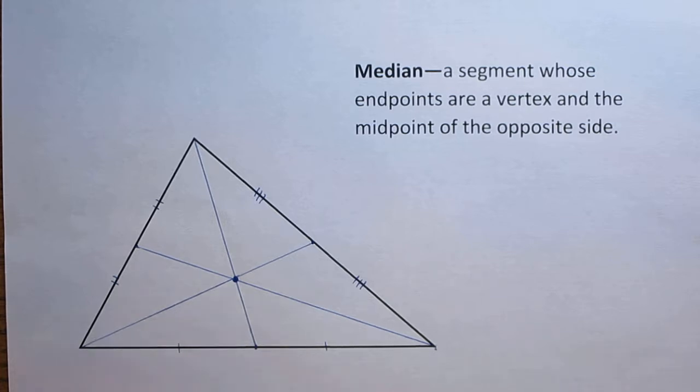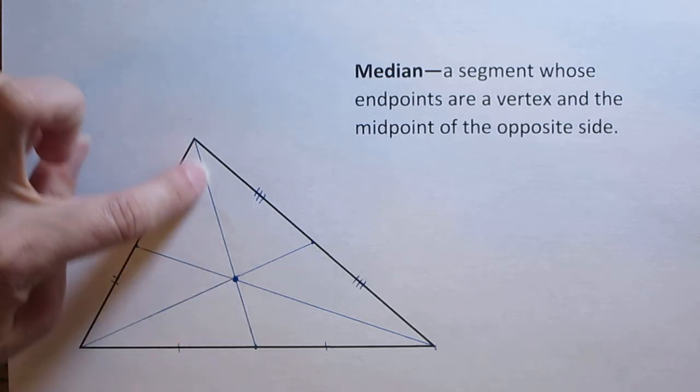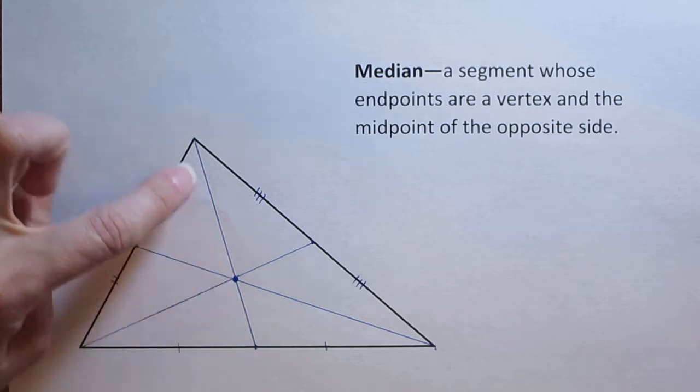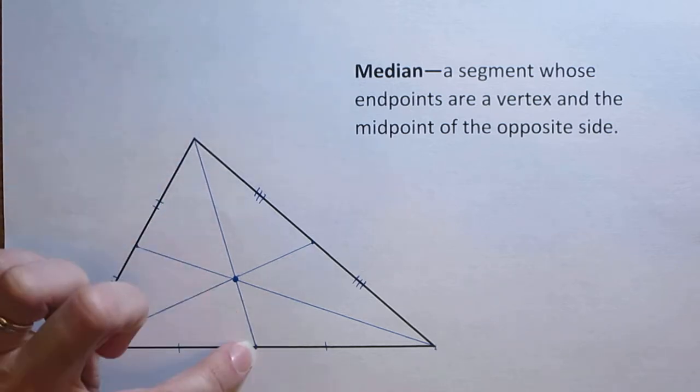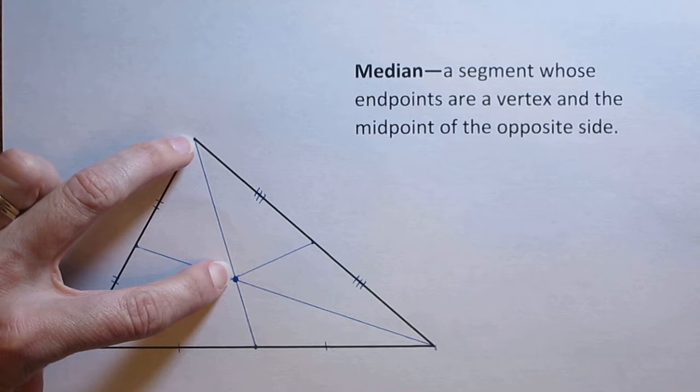Now, what that means is the centroid is going to be ⅔ of the distance from the vertex, each one of these. So whatever your distance happens to be for the length of this median,